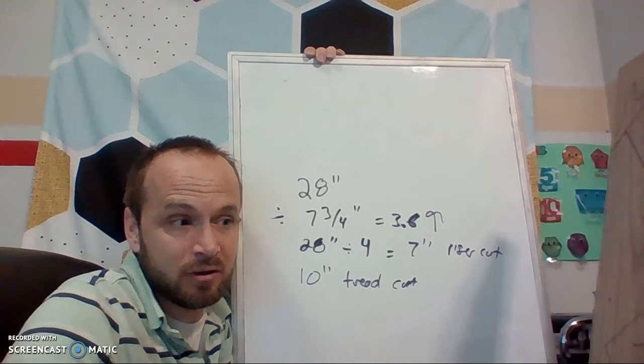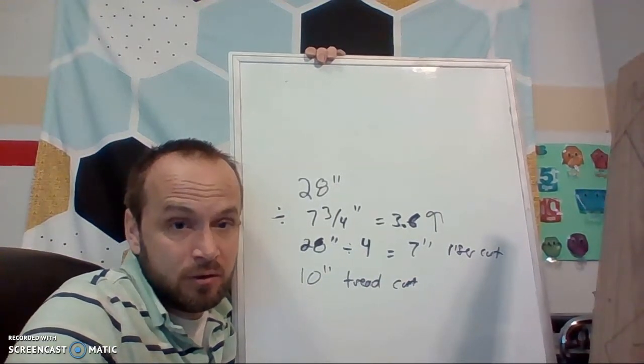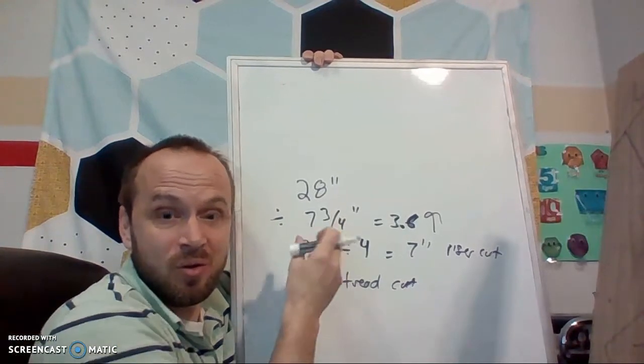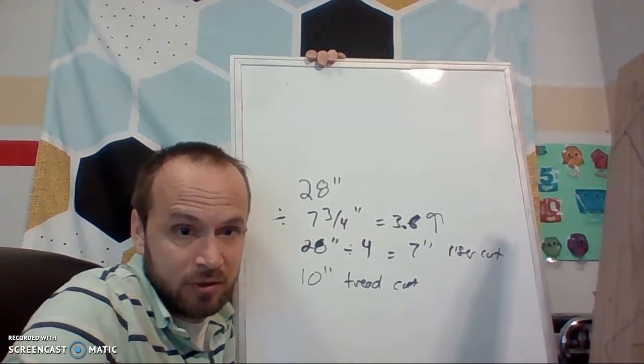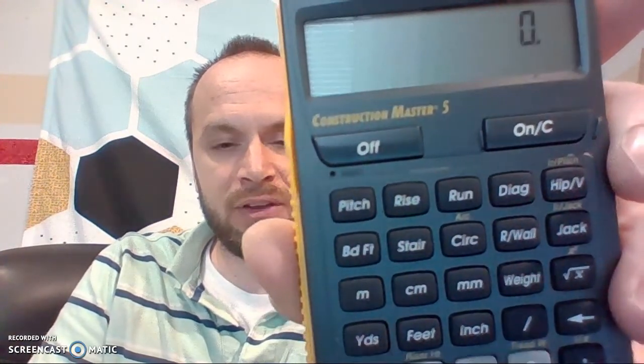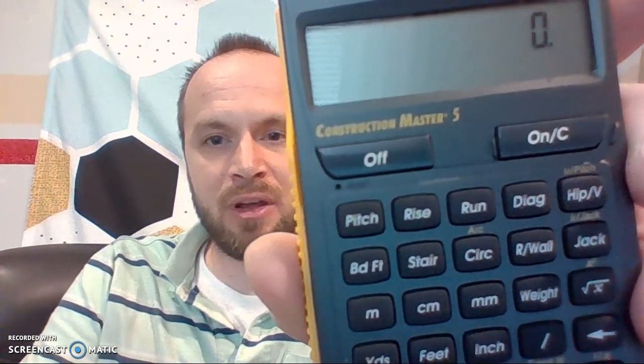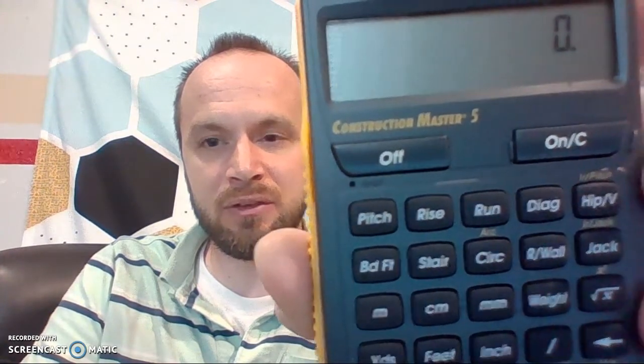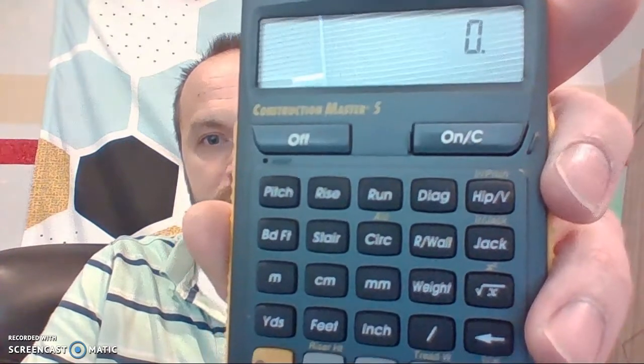Now I'm going to show you something on the Construction Math Calculator, if you have one of those. You can also do this calculation — though it's good to know the math by hand, because your calculator will not always give you the correct answer. Here's the Construction Master Calculator, version 5. It has a stair button. Any time you type in a measurement, you need to include the units — that's one of the advantages of this calculator, it works directly with units. So I type in 28, click the inch button — 28 inches — and I'm going to store that as my rise by pushing the rise button.